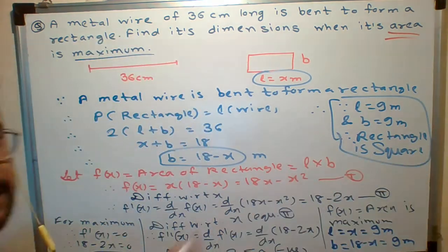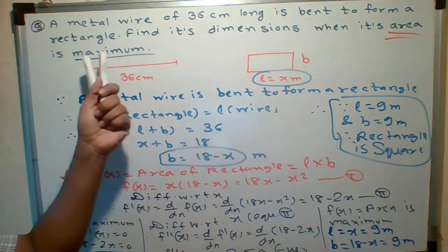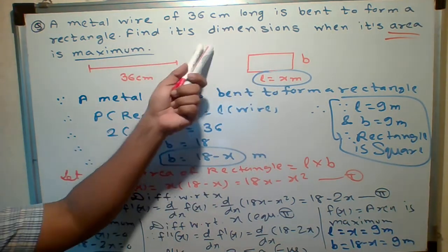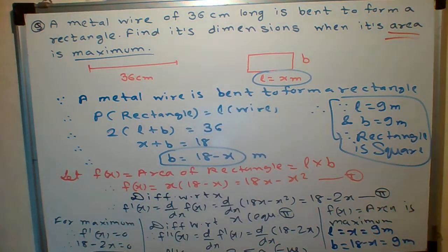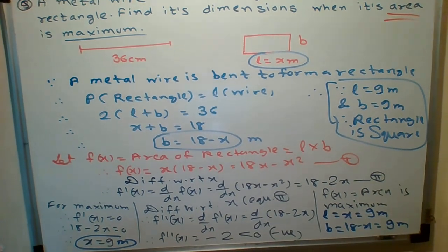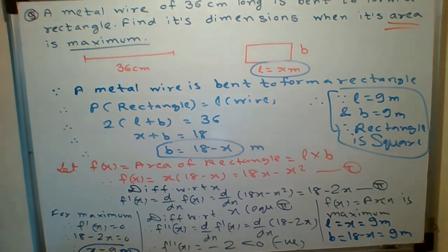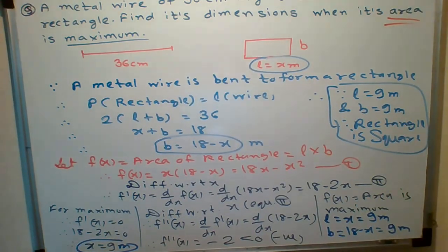They are asked. But sometimes they will ask in the same question, find its dimension when its area is maximum and show that it is a square. When it is square, length is equal to breadth. So, essay type questions you will get in exam. Just follow the question and find out the answer. Hope so you understood the question. Please copy, all of you.